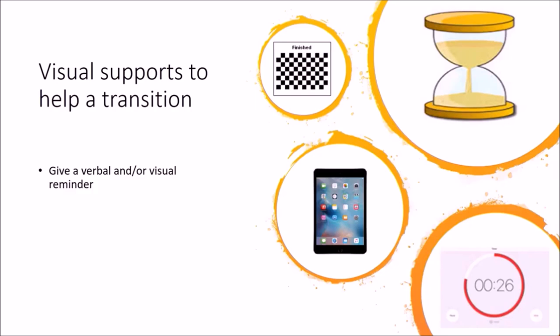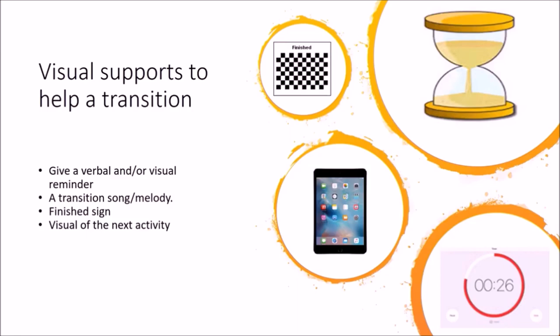A timer on a phone or iPad works as well. We can also use a transition song or melody to indicate that an activity is finishing or another is starting — for example, a tidy-up song or the same song consistently to show circle time is starting. We can use a finish sign or symbol consistently when activities are finished. We can also use a visual of the next activity — this could be a picture, a symbol, or even an object, for example a wooden spoon to indicate a baking activity or a bubble packet to show the next activity is bubbles.